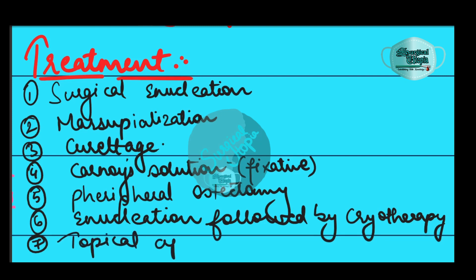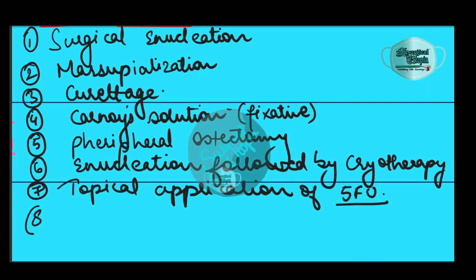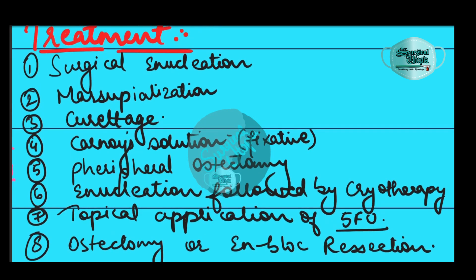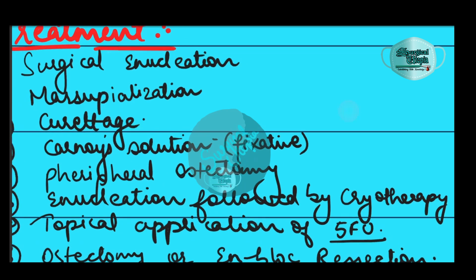The next treatment option is peripheral ostectomy, in which at least 1.5 mm of bone is removed beyond the cystic margin to prevent recurrence. Another option is enucleation followed by cryotherapy. Topical application of 5-fluorouracil after enucleation is also an option. Finally, in cases of larger cysts, ostectomy or en-bloc resection can be done — en-bloc resection involves removal of the cyst with surrounding tissue.